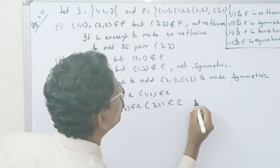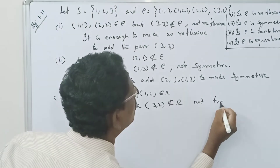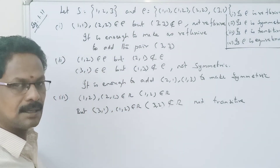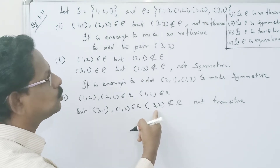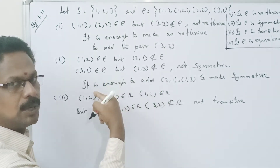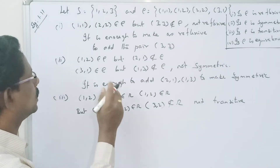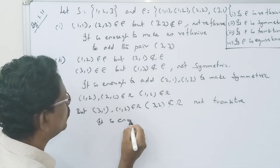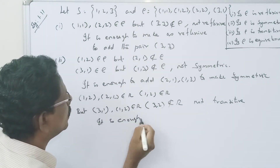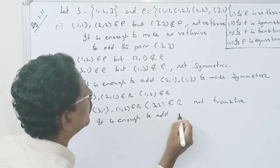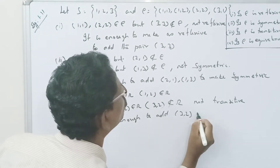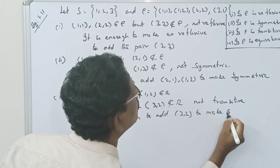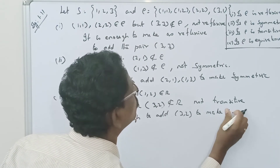Therefore R is not transitive. It is enough to add (3,2) to make R transitive.